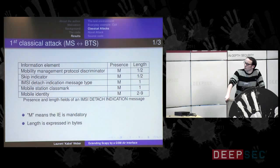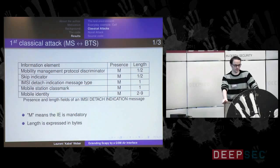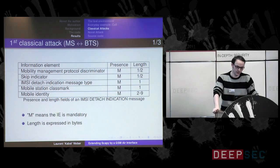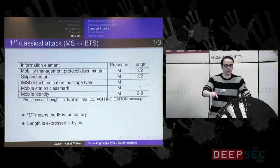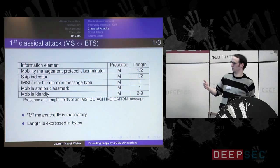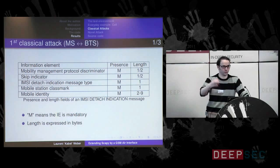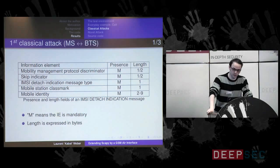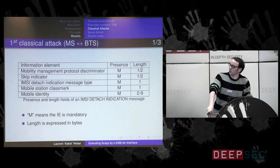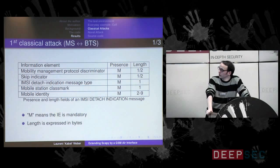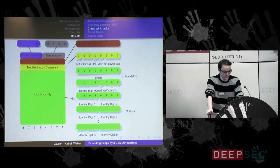Classical attacks are attacks that are well-known and understood, and you can find them in literature. The first one I'm going to present is an IMSI Detach Indication message sent from the mobile station to the base transceiver station. I'm only presenting this in theory since I'm not sending messages to a real network — just to show you how easily this attack can now be realized. The specification of this message shows all information elements are mandatory, with fixed lengths except for the mobile identity which ranges from 2 to 9 bytes.